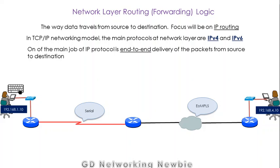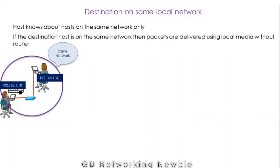Welcome back everyone. This video is basically a continuation of our previous video on network layer routing. We were discussing how data travels from source to destination using IP routing. In the first scenario, we discussed that if the source and destination are on the same local area network, they don't need any routing — they can exchange information with each other using local media.